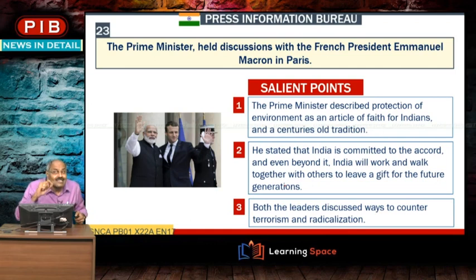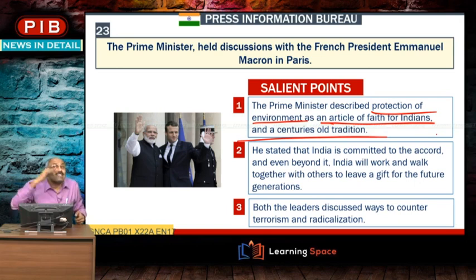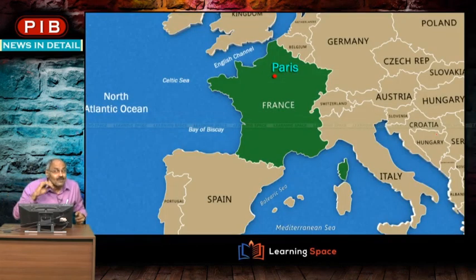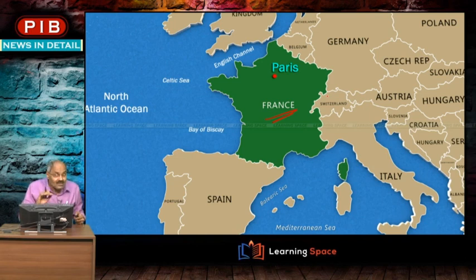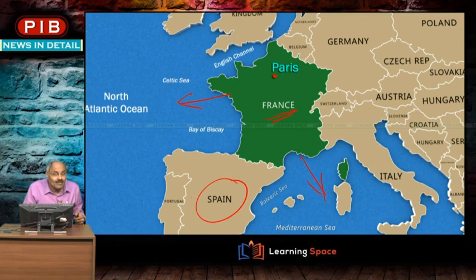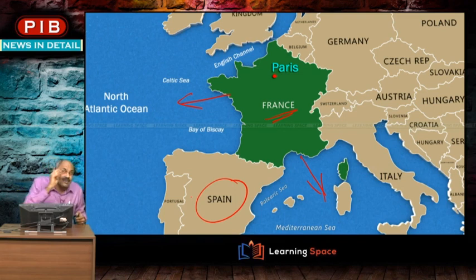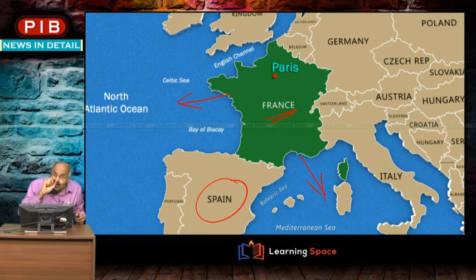The Prime Minister held discussions with French President Emmanuel Macron in Paris and described protection of the environment as an article of faith for Indians and a centuries-old tradition. France has a coastline towards both the Mediterranean Sea and the Atlantic Ocean. Similarly, Morocco in Africa is the country with a coastline on both the Mediterranean and Atlantic.